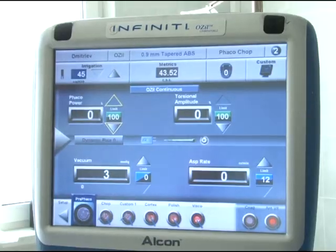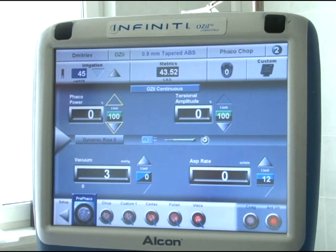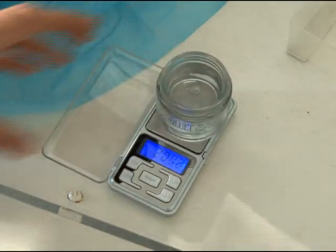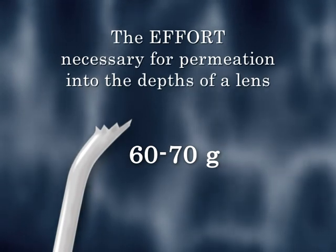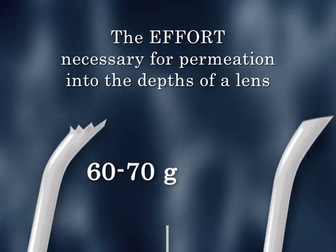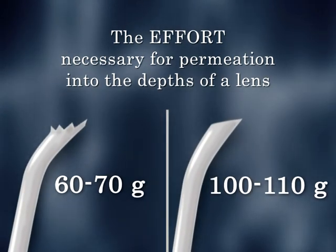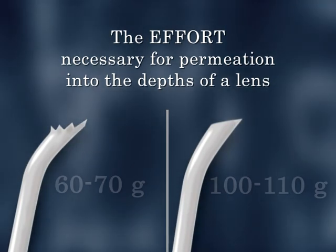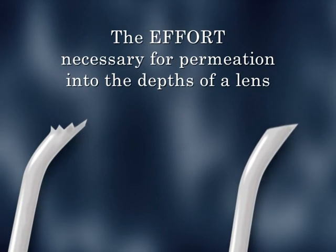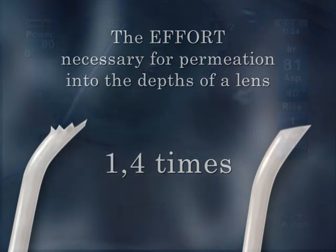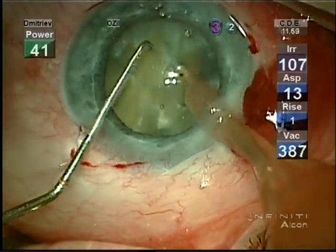It was found that the effort required for the new needle to permeate into the depth of the lens with a fifth degree of density equals 60 to 70 grams. When using a standard needle, the effort necessary for permeation into the depth of the lens was 100 to 110 grams. Therefore, the effort necessary for the new phaco needle to permeate into the depth of the lens is 1.4 times less compared to a standard needle.